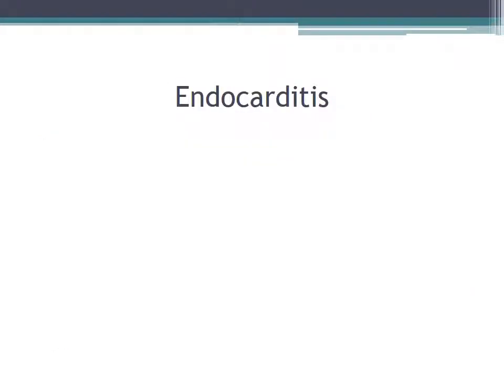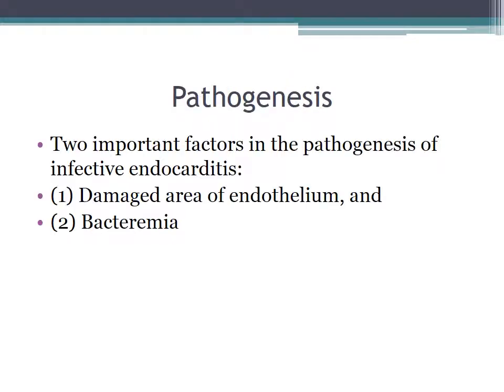As you may realize, these two vignettes represent the subacute and acute forms of endocarditis. Turning towards the pathogenesis of endocarditis, there are two important factors to be aware of. The first is that there's a damaged area of endothelium, and the second is that there's bacteremia.